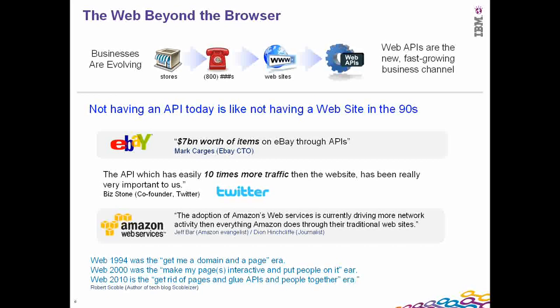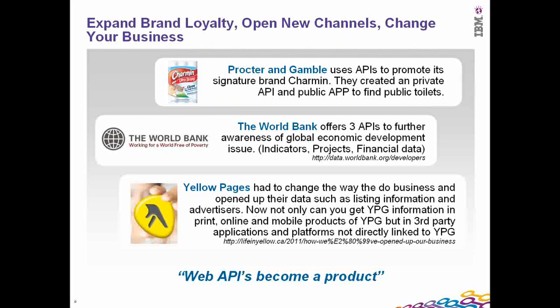Here are some outstanding examples of how enterprises have made best use of APIs. You have eBay, which has made $7 billion worth of business via its APIs — via channels that exploit its APIs. And you have the other example of Twitter, which sees 10 times more traffic through its APIs than what it sees over its interactive website. And there are a whole lot of others as well.